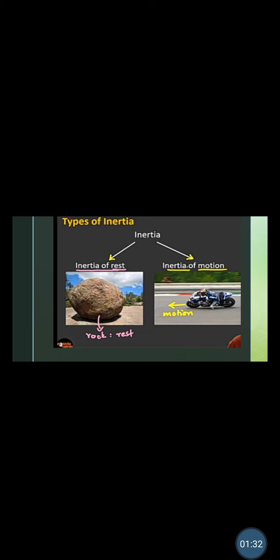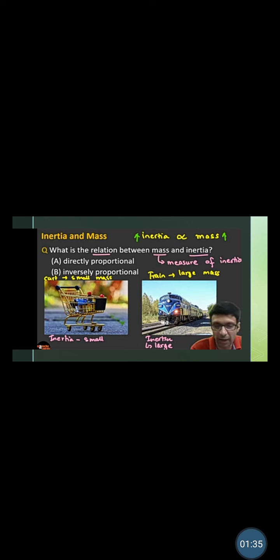Inertia and mass are related with each other. Inertia is directly proportional to the mass. In this slide we see a picture of cart and second is picture of train. This cart is lighter, means having small mass as compared to the train, so that cart having small inertia and train has large mass and large inertia.